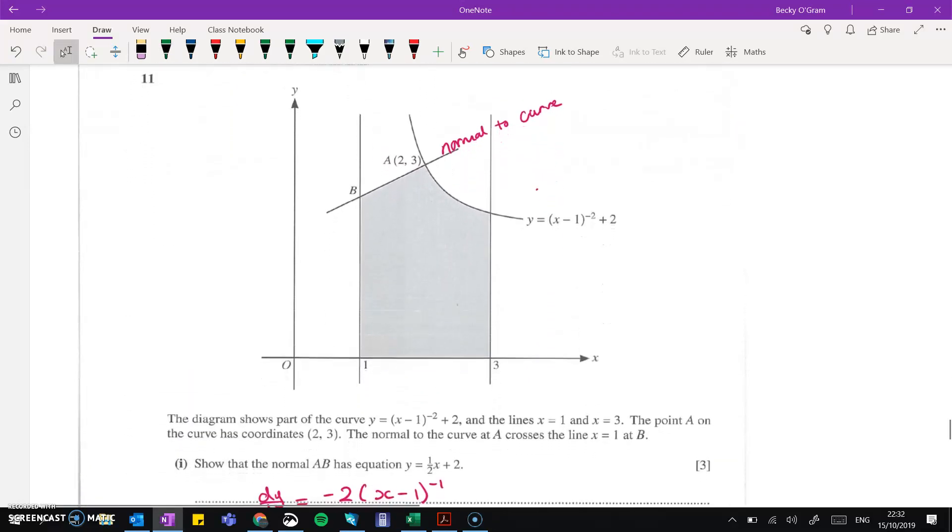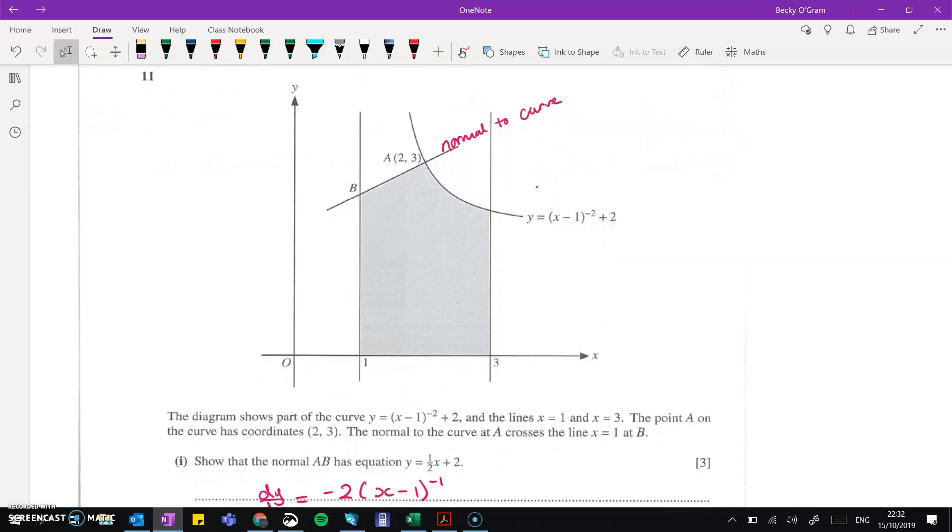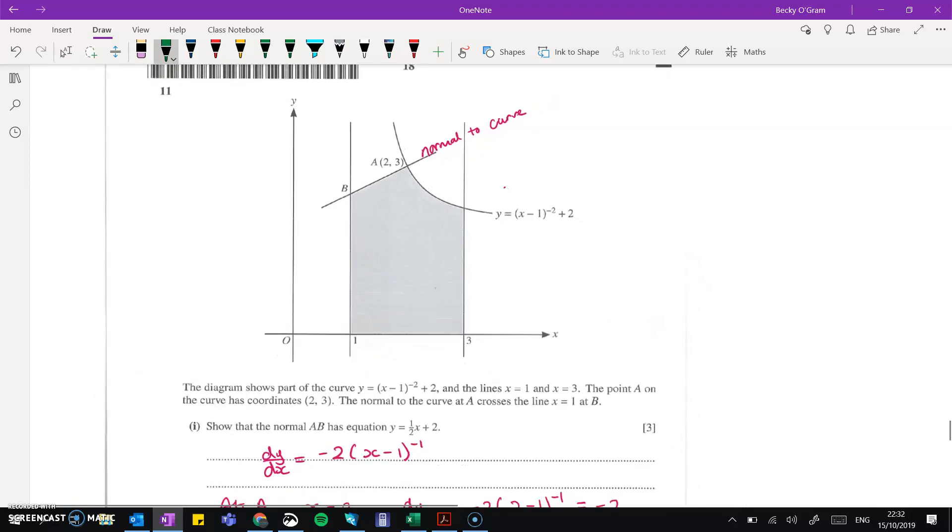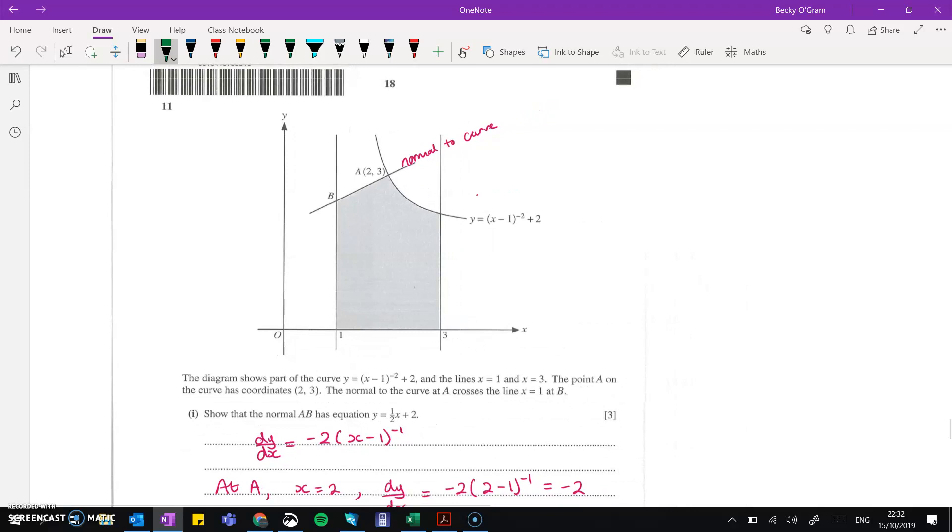All right, question 11, last one. So we've got this diagram. It's a kind of tricky curve to work with because of the power to minus 2. We're told that that line there was a normal to the curve, meaning that it crosses at 90 degrees to the curve, or that the gradient is the negative reciprocal of the gradient of the curve at that point.